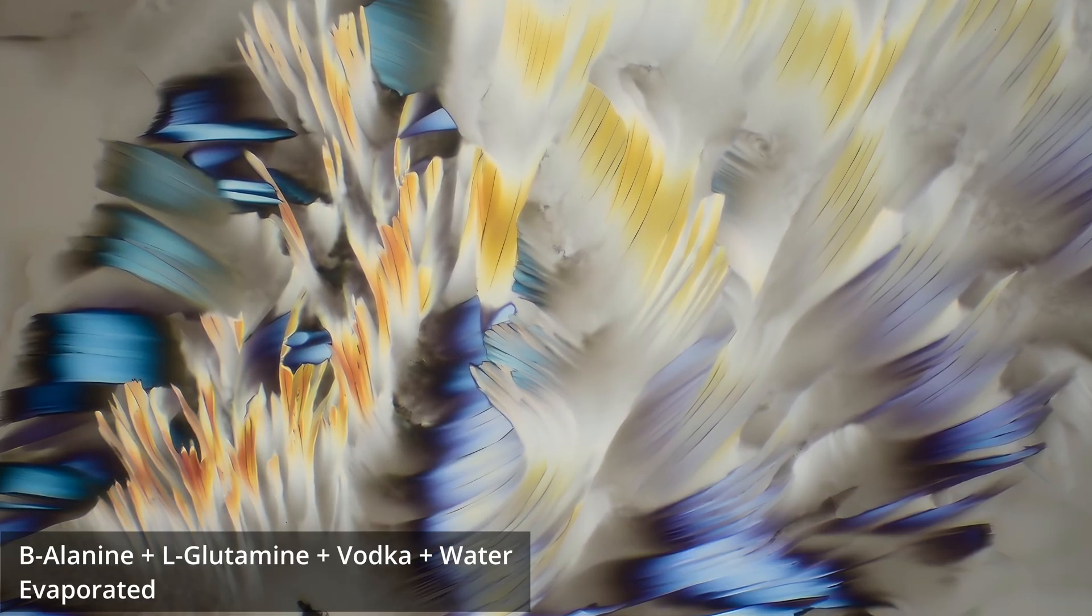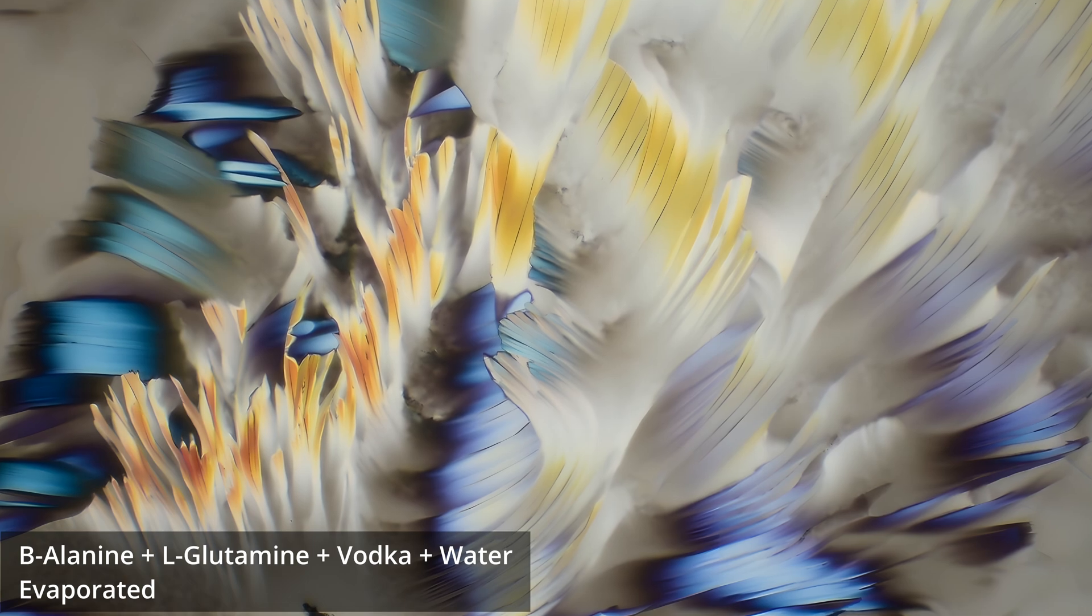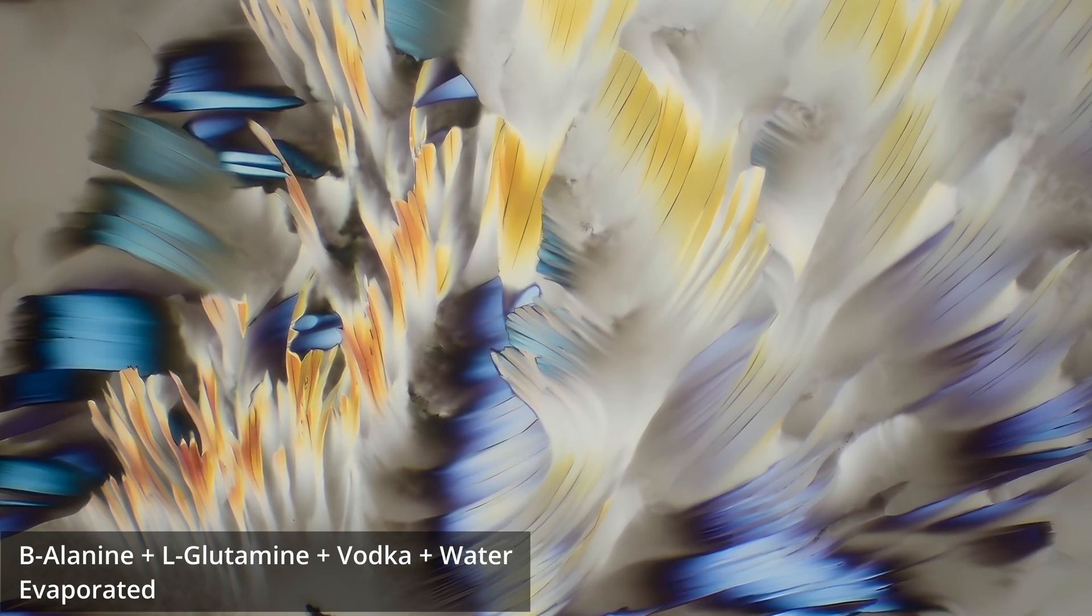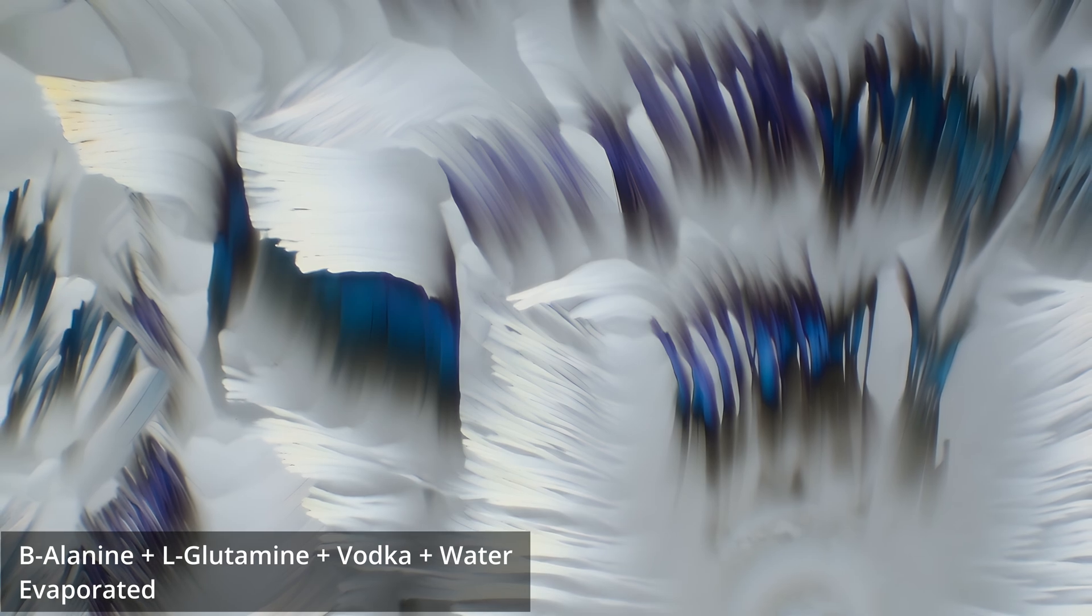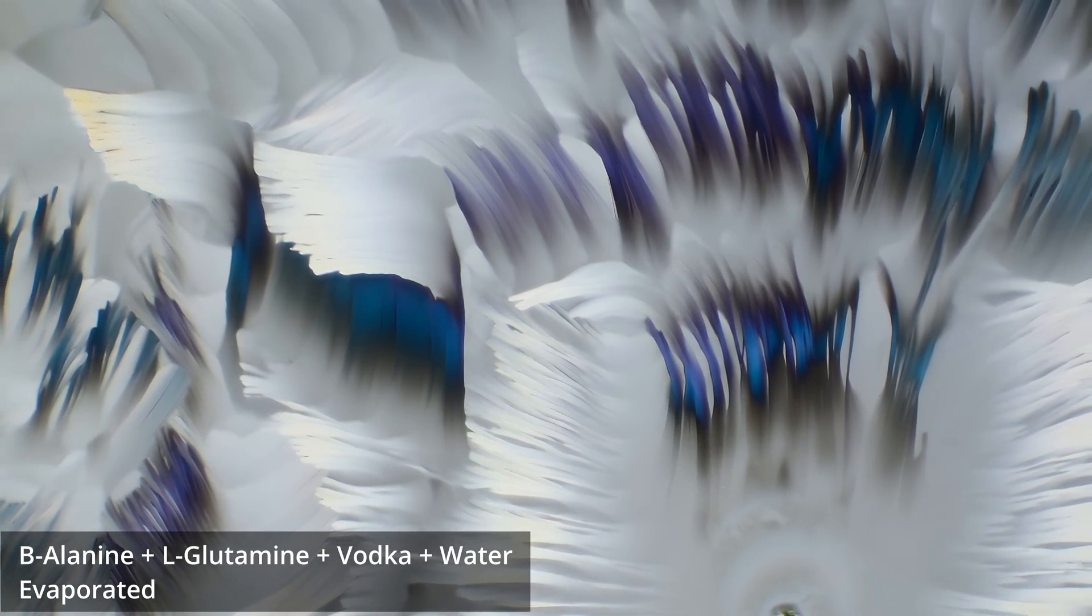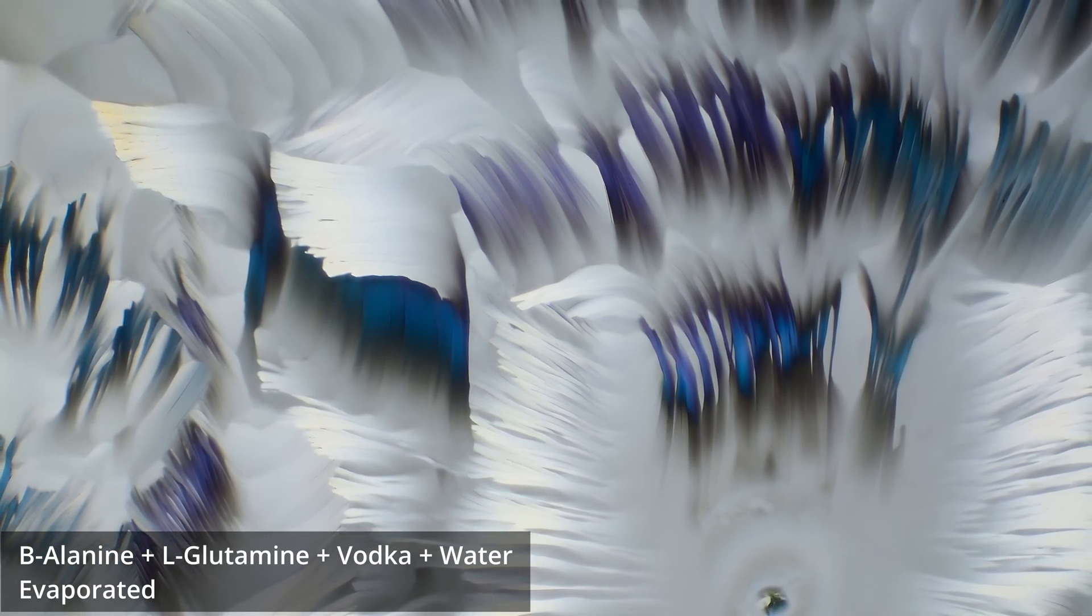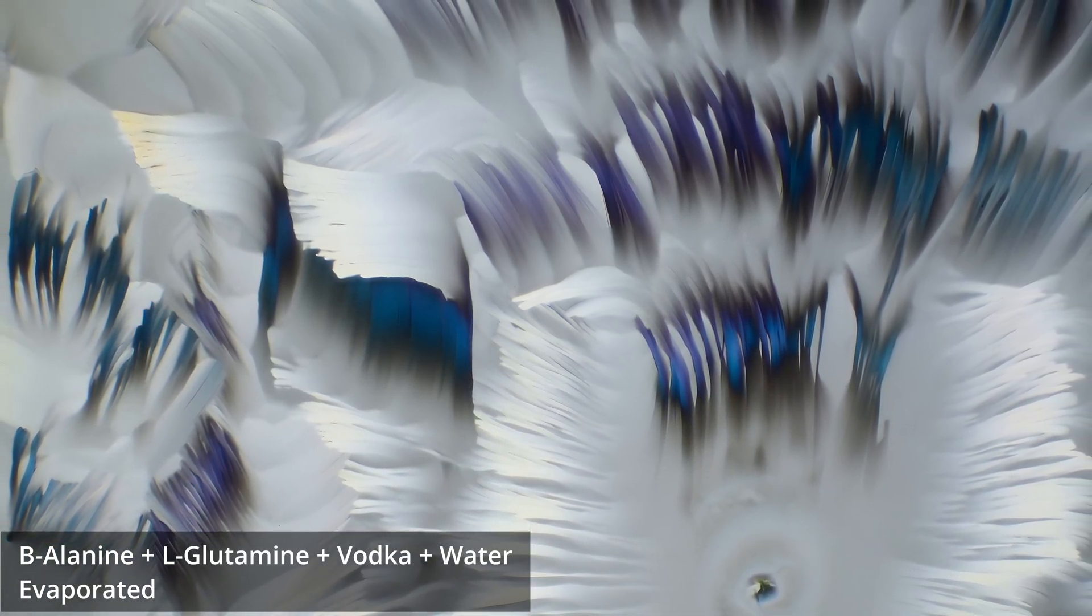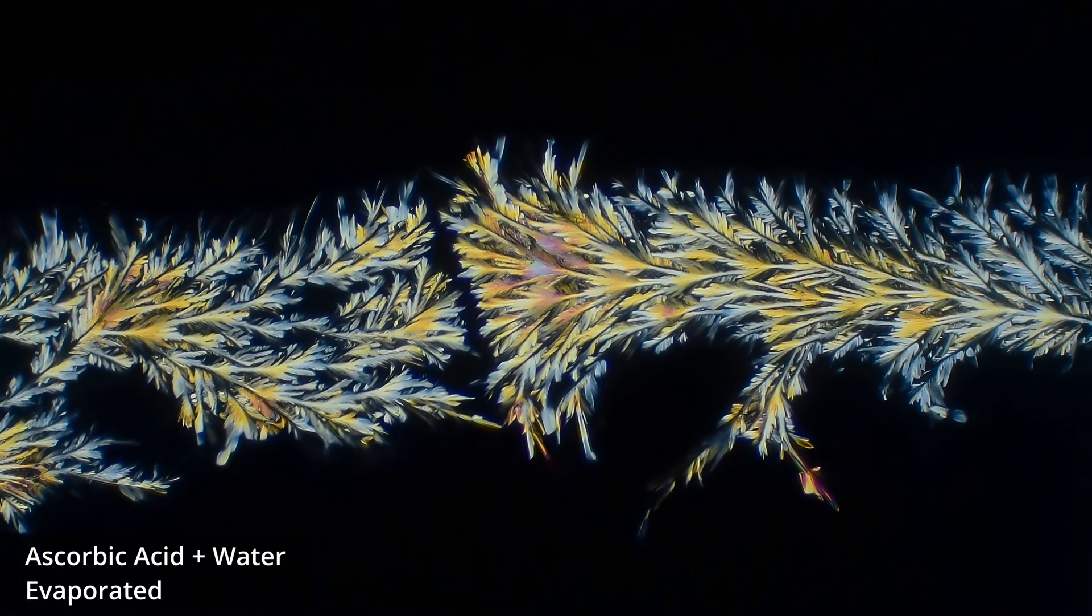Solution-based crystallization is thermodynamically controlled. Evaporation happens gradually, giving molecules time to find their optimal positions. The solvent acts as a mediator, allowing molecules to diffuse and orient themselves more carefully. This usually produces the curved flowing structures we see in systems like BALG.